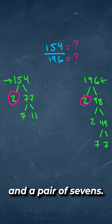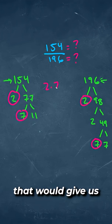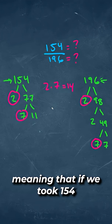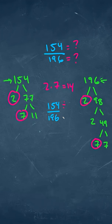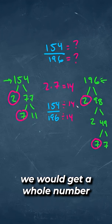You'll notice that we have a pair of 2s and a pair of 7s, and if we multiply 2 times 7, that would give us a value of 14, meaning that if we took 154 and we divided it by 14 on both top and bottom, we would get a whole number on each side.